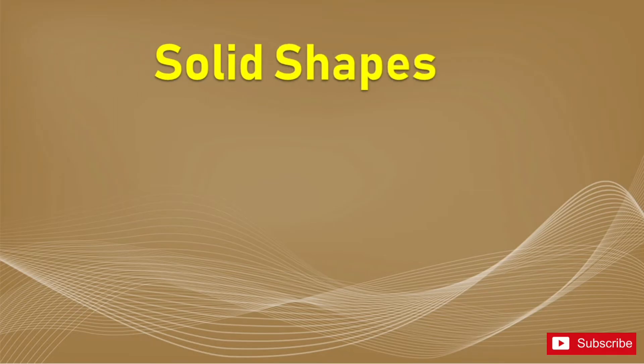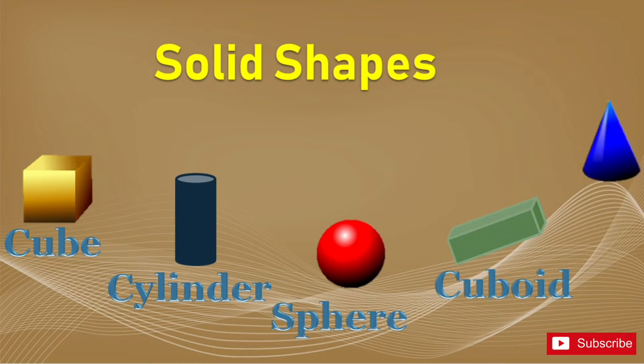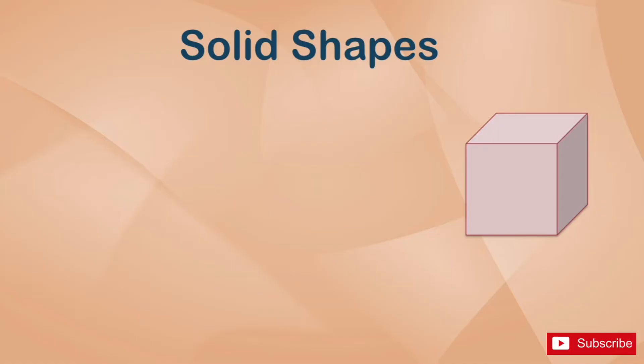The shapes we are learning about are cube, cylinder, sphere, cuboid, cone. Let's look at their properties. All solid shapes have faces. A face is a flat or curved surface.